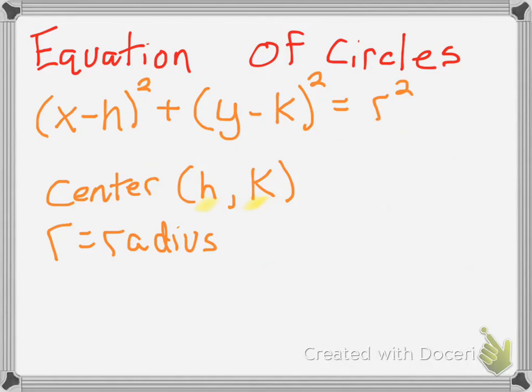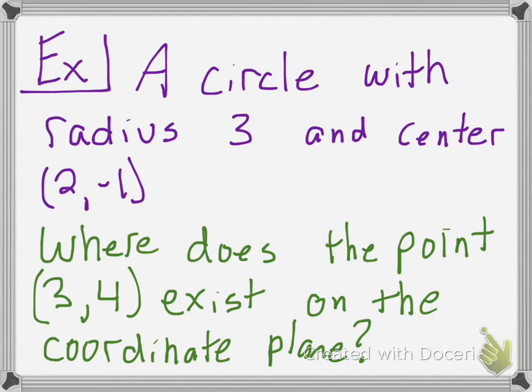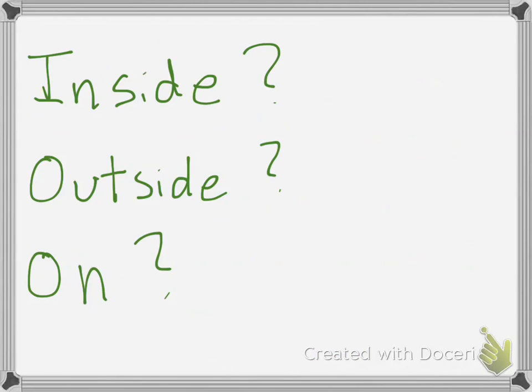Now in this example, I'm going to give you a circle with a radius of three, and I want the center of the circle to be (2, -1). I'll show you how to draw that up here in a second. And then the question is, where does the point (3, 4) exist on the coordinate plane? Pretty much, is it inside the circle, outside the circle, or on the circle?